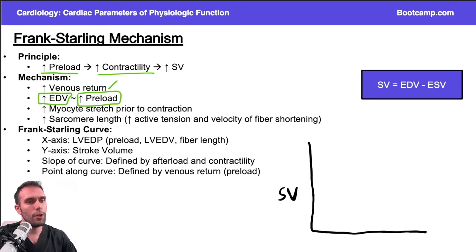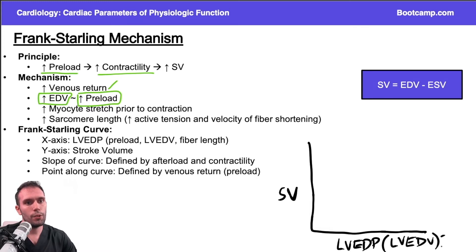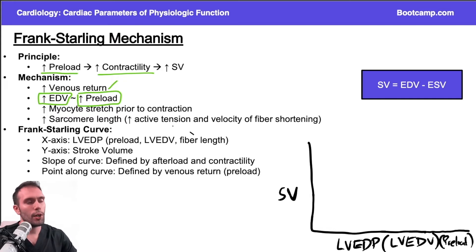We have stroke volume on the y-axis and left ventricular end-diastolic pressure on the x-axis. You can label the x-axis as left ventricular end-diastolic pressure, left ventricular end-diastolic volume, preload, or even fiber length — because as you have more preload, you have more stretch and increased myocardial fiber length. These terms are all essentially synonymous.